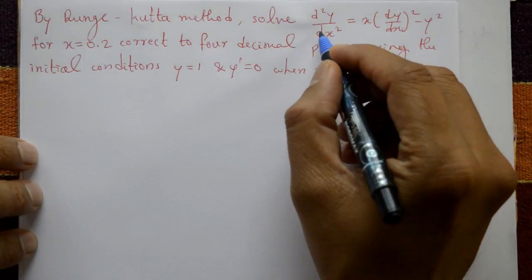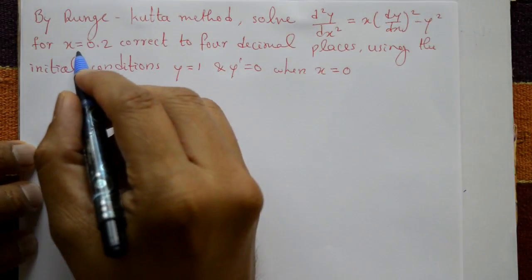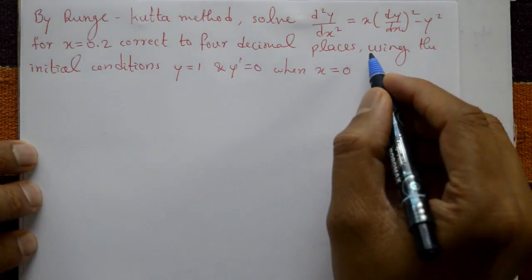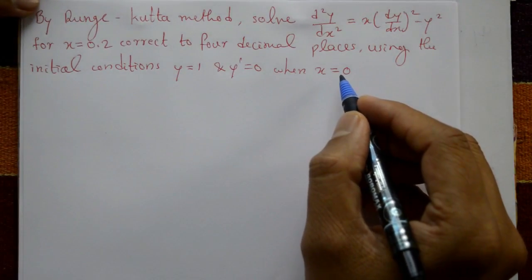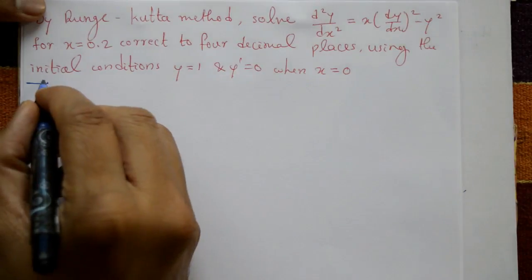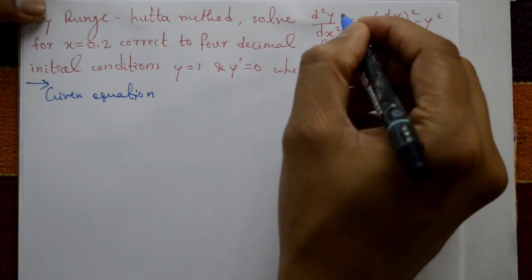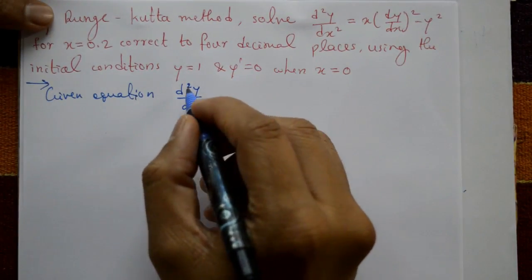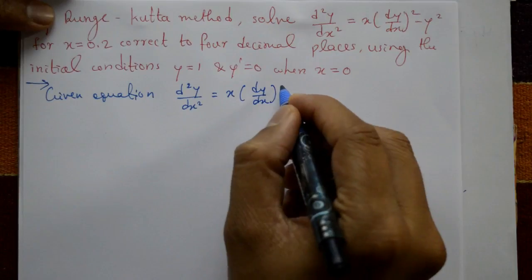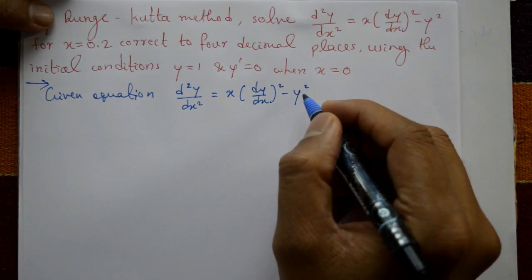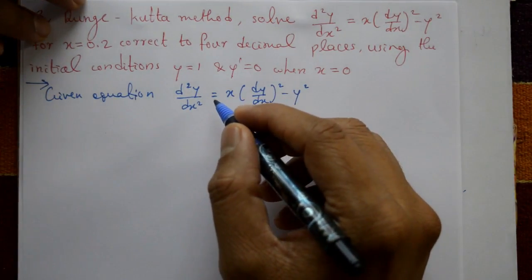By Runge-Kutta method, solve d²y/dx² = x(dy/dx)² - y² for x = 0.2, correct to four decimal places, using the initial conditions y = 1, y' = 0 at x = 0. The given equation is d²y/dx² = x(dy/dx)² - y². This is a second order differential equation which we will reduce into first order equations.